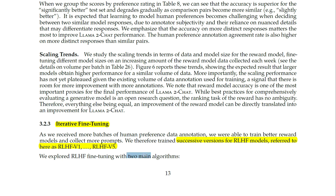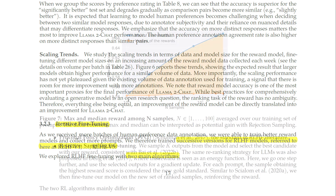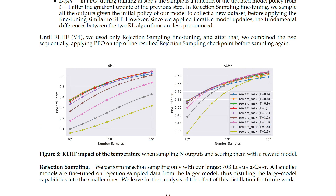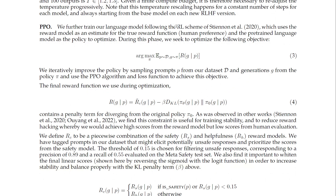They explored RLHF fine-tuning with two main algorithms: proximal policy optimization and rejection sampling fine-tuning. On each batch of human preference annotation for reward modeling, a thousand examples were held out as a test set. They perform rejection sampling only with their largest 70 billion LLAMA2 Chat model. All smaller models are fine-tuned on rejection sample data from the larger model, thus distilling the large model capabilities into the smaller ones.